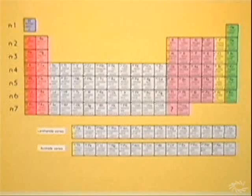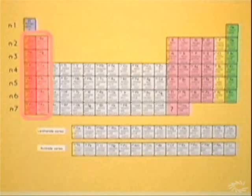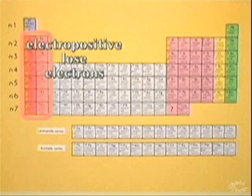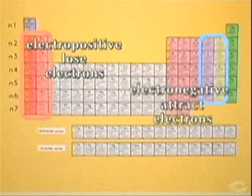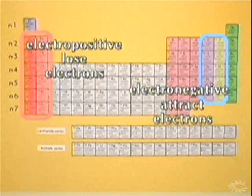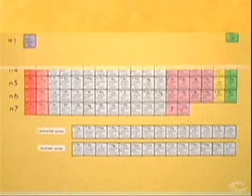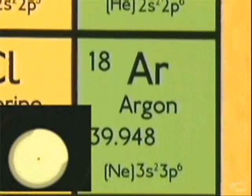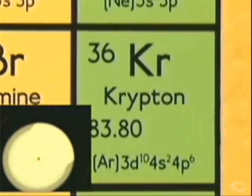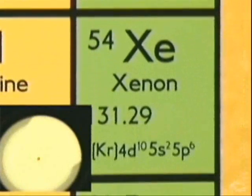As a general rule, the elements on the left-hand side of the periodic table are termed electropositive, because they tend to easily lose their outer valence electrons, while those on the right-hand side of the table are electronegative, tending to attract electrons so they can fill their outer energy level. The noble gases are very stable elements because their valence energy level is full of electrons.